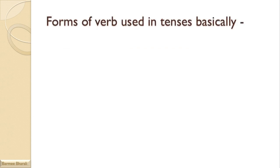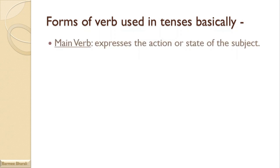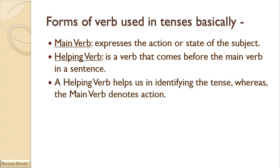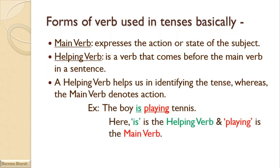Now, before discussing the uses of tenses and sentence structure, we have to learn about the forms of verb used in tenses — basically the main verb and a helping verb. The main verb expresses the action or state of the subject. A helping verb comes before the main verb and helps us identify the tense, while the main verb denotes the action. For example, in 'The boys is playing tennis,' 'is' is the helping verb and 'playing' is the main verb.